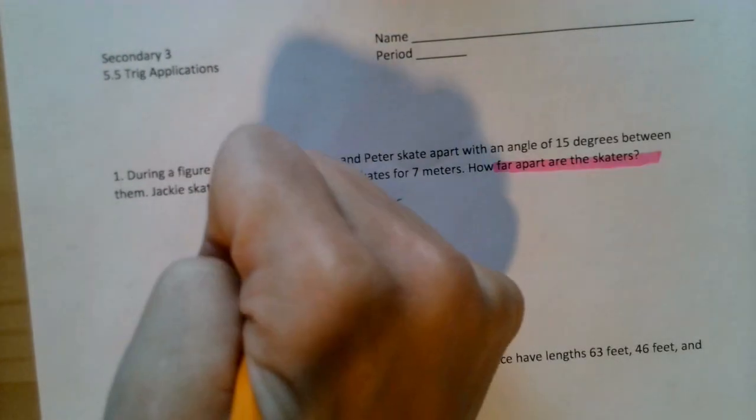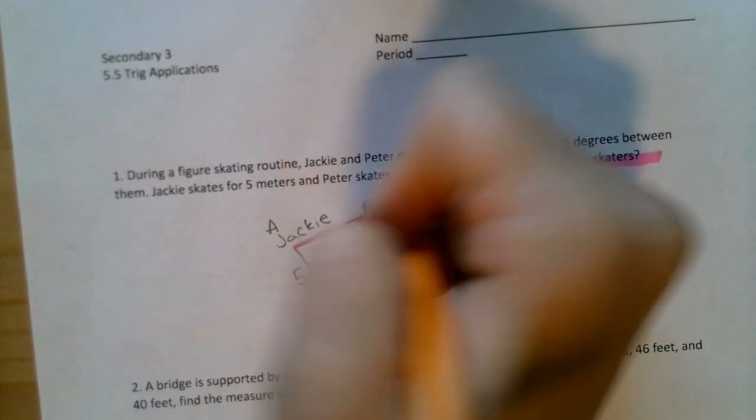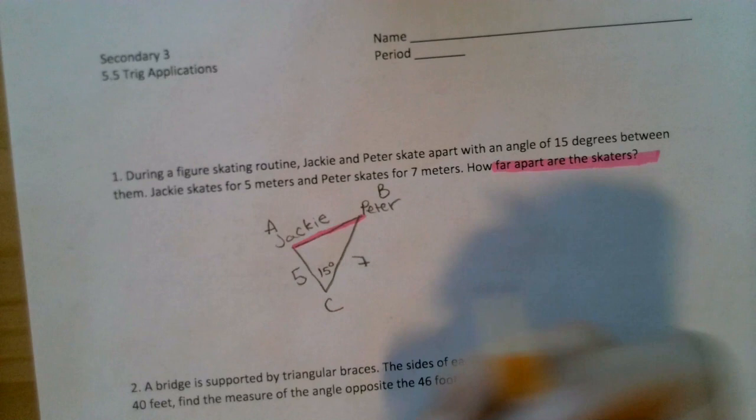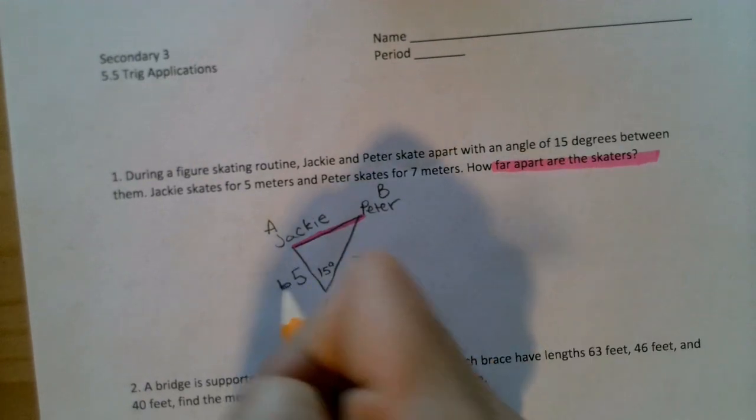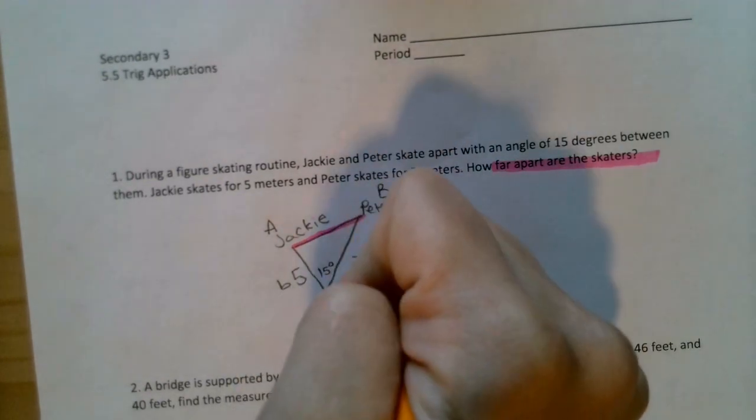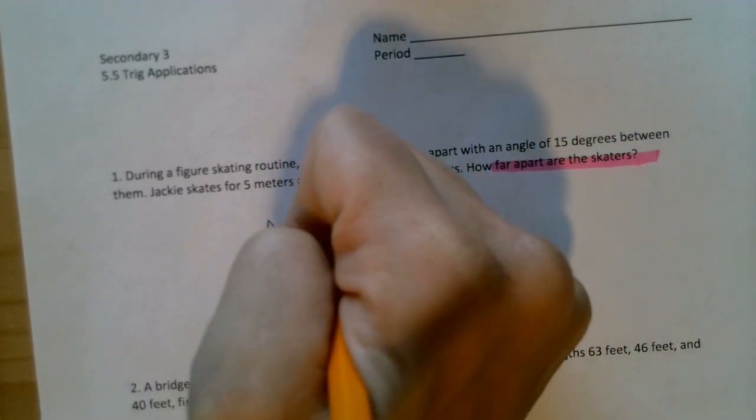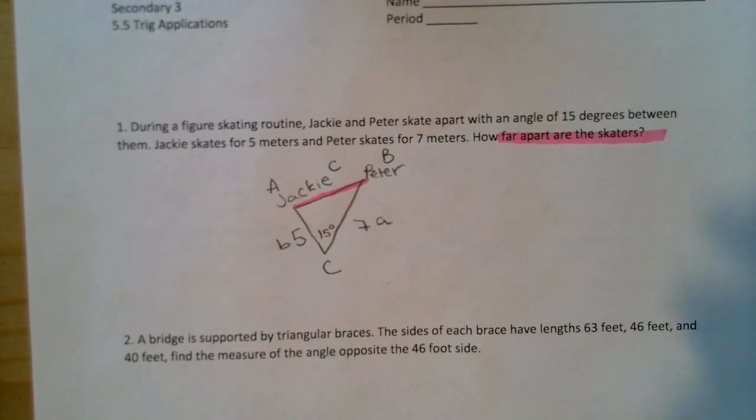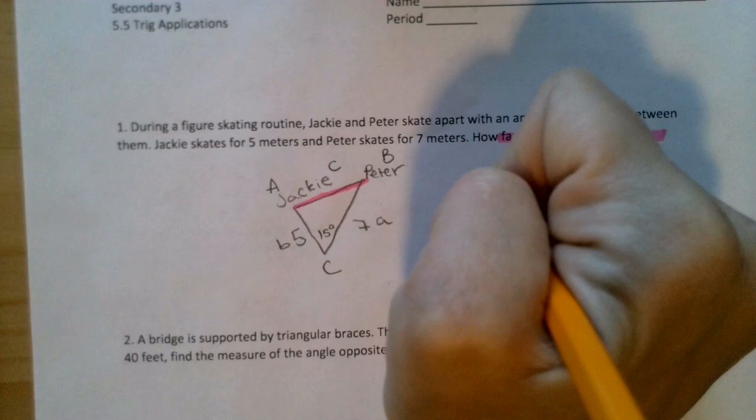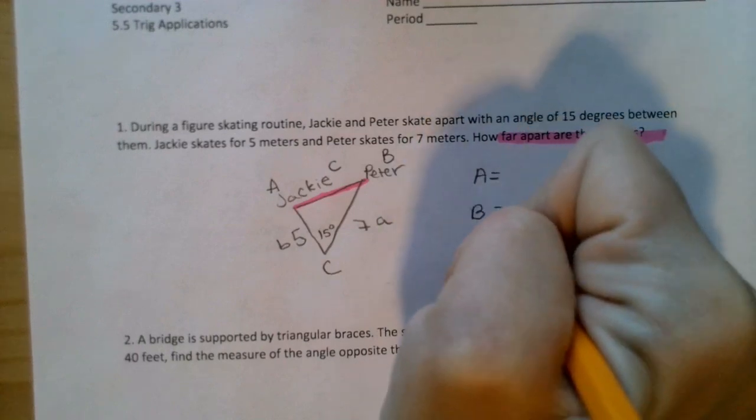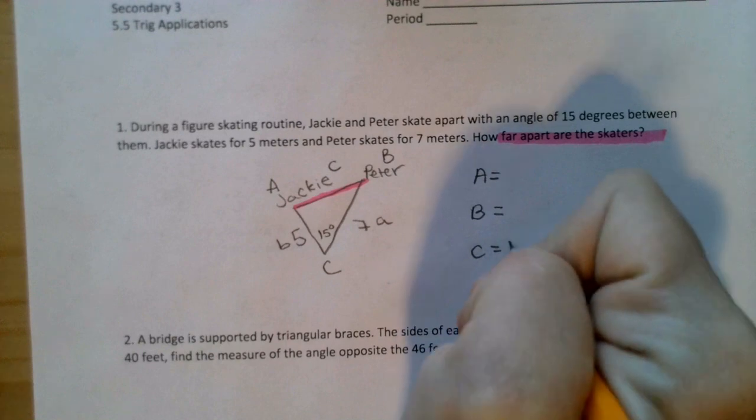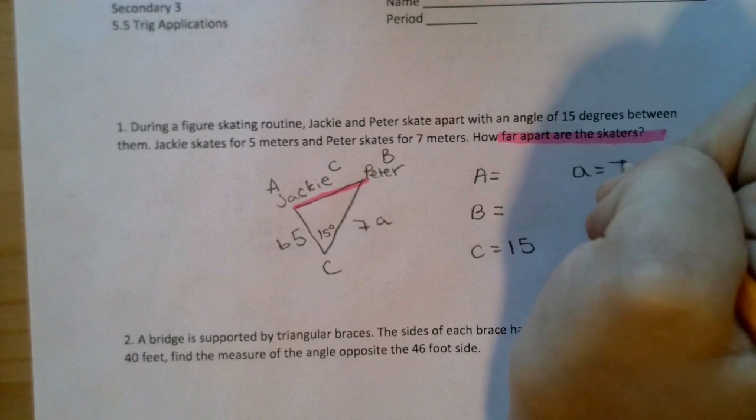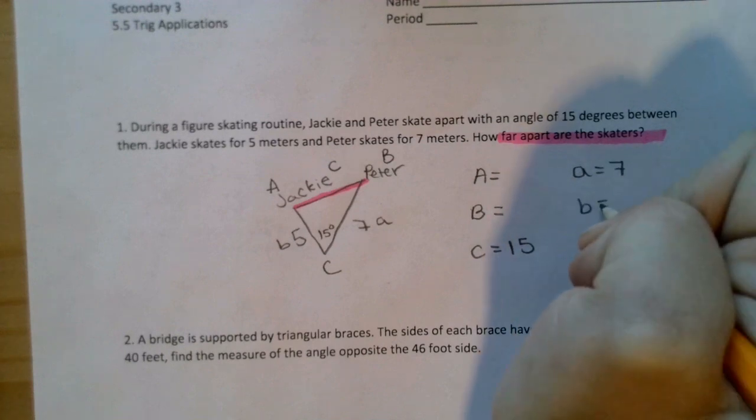Just make sure the side opposite is the same letter. So I'm going to say that Jackie is A, Peter is B, and when they start with C. This means that 5 meters is little b, 7 meter is little a, and the side we are trying to find is little c. This allows us to organize our work a little bit better. We know big C is 15 degrees, little a is 7, little b is 5.